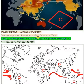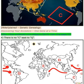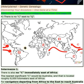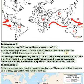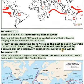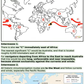Point 4: There is no C east of Q. Intermezzo 1: There is also no C immediately east of Africa. The nearest significant C would be Australia, and that is located roughly 8,000 kilometers east of Africa. For navigators departing from Africa to the east to reach Australia, that trip would also be long, unfavorable and near impossible, because almost exclusively against the currents and winds.